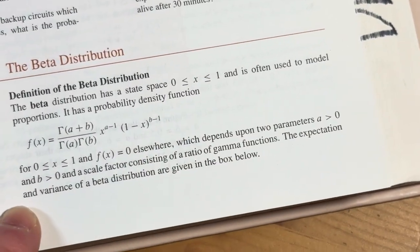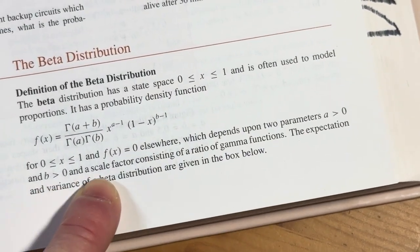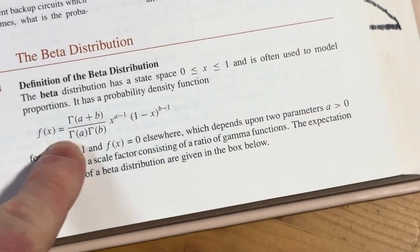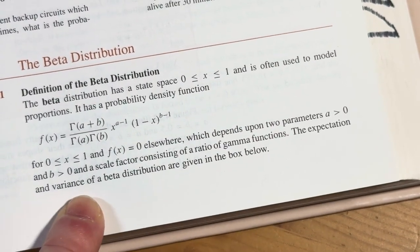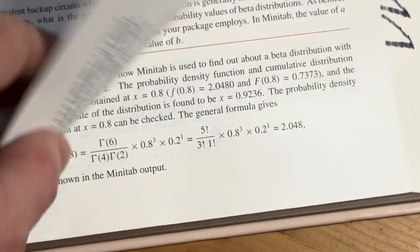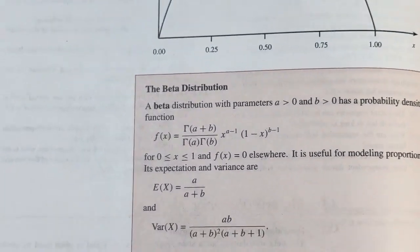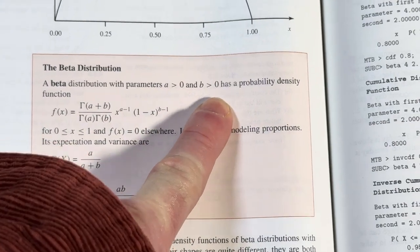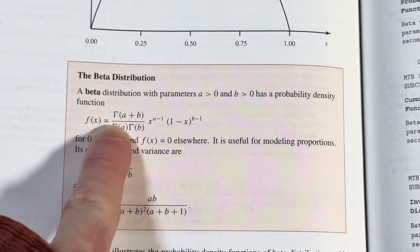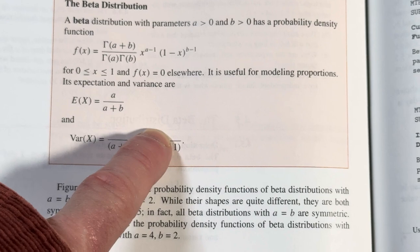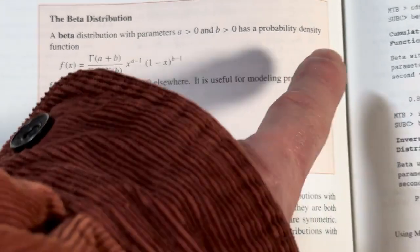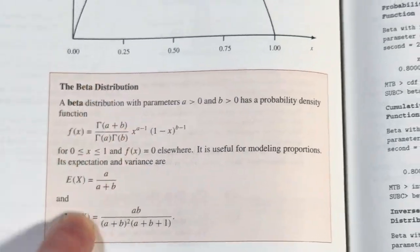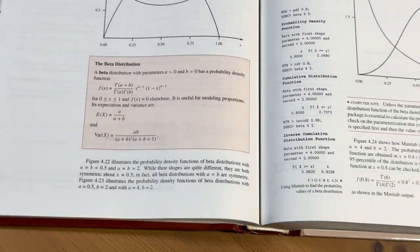a greater than zero and b greater than zero and a scale factor consisting of a ratio of gamma functions. So you have this ratio here of the gamma functions. The expectation and variance of a beta distribution are given in the box below. Here's the beta distribution. A beta distribution with parameters a greater than zero and b greater than zero has a probability density function equal to that. It is useful for modeling proportions. This is the expectation, and this is the variance. This is probably something you've never seen.